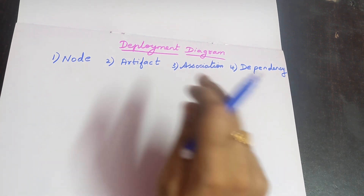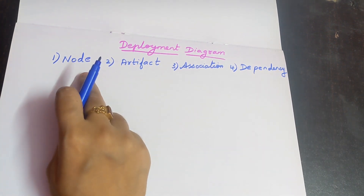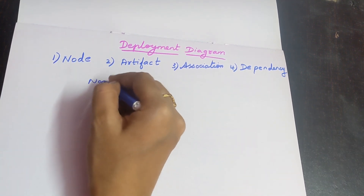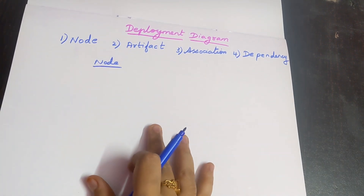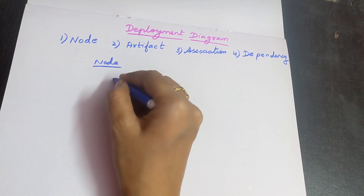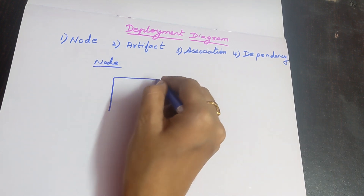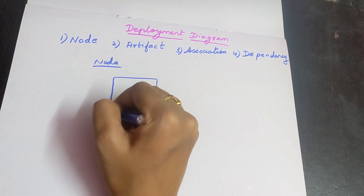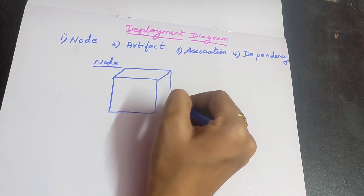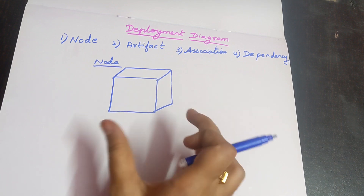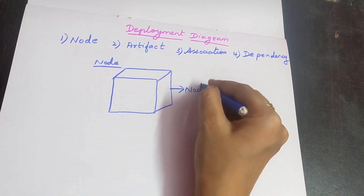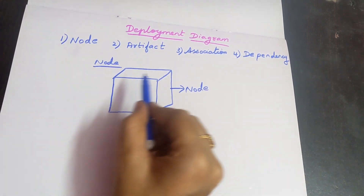First, let us look into the symbol of node. How will you draw the symbol of node? The first step is you need to draw a 3D box. Draw a box like this. This 3D box is known as a node.